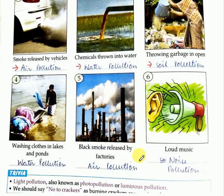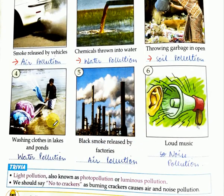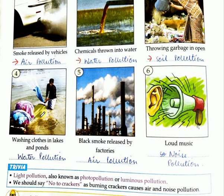Then let's move on to the fourth question. You can see this dhobi uncle is washing clothes in lakes and ponds. So what happens when he washes clothes in lakes and ponds? It pollutes the water. So the answer is water pollution.